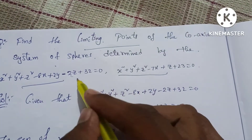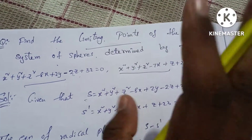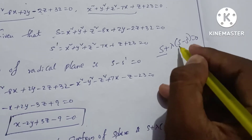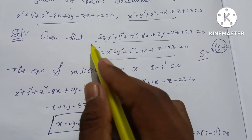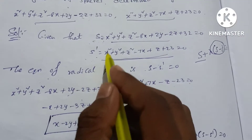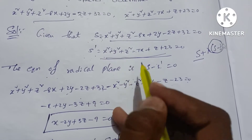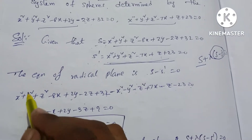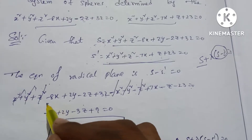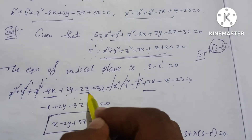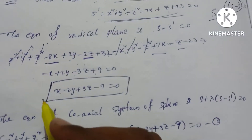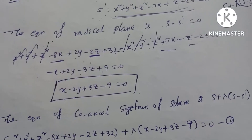Given the first and second sphere equations, we find the radical plane using S minus S dash equal to 0. Substituting the sphere equations and cancelling x², y², z² terms, we get: minus 8x plus 7x gives minus x; 2y minus 2z gives the y and z terms; 32 minus 23 equals 9. So the radical plane equation is x minus 2y plus 3z minus 9 equal to 0.